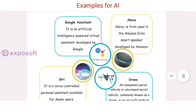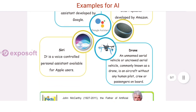Let's see some examples of Artificial Intelligence. Google Assistant is an AI-powered virtual assistant developed by Google. Alexa is first used in the Amazon Echo smart speaker developed by Amazon. Siri is a voice-controlled personal assistant available for Apple users.